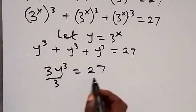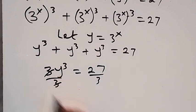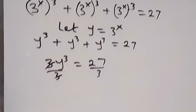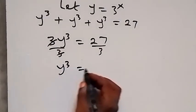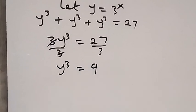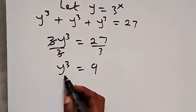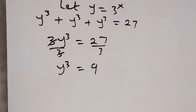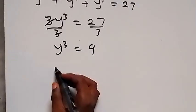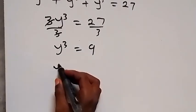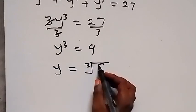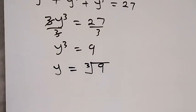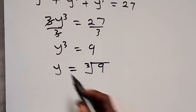Now divide both sides by 3. The 3s cancel, giving us y raised to power 3 equals 9. Then we take the cube root on both sides — the cube root will cancel, so y equals the cube root of 9.